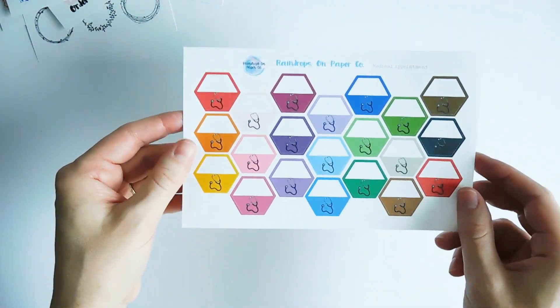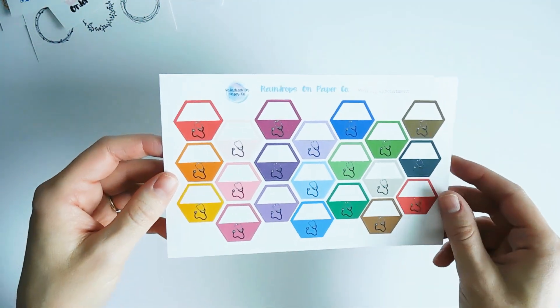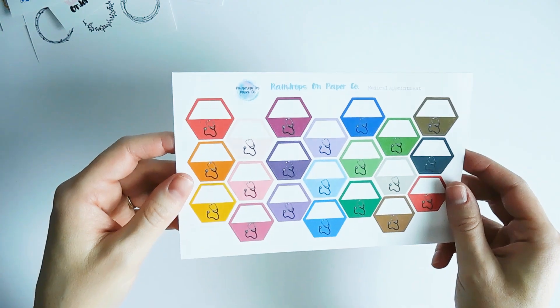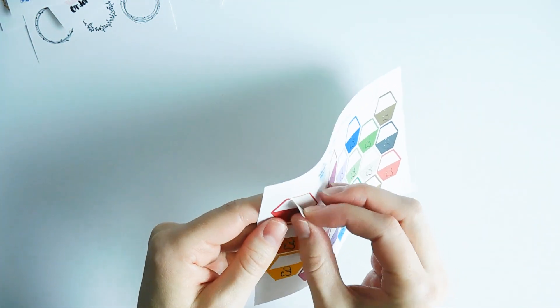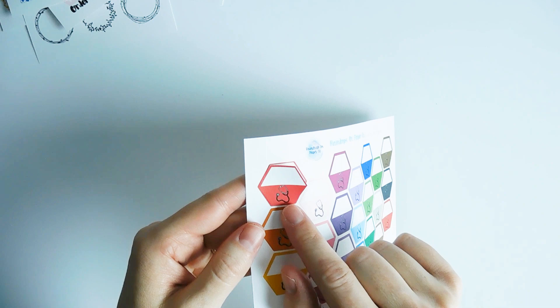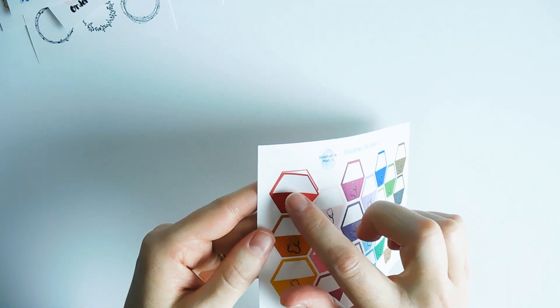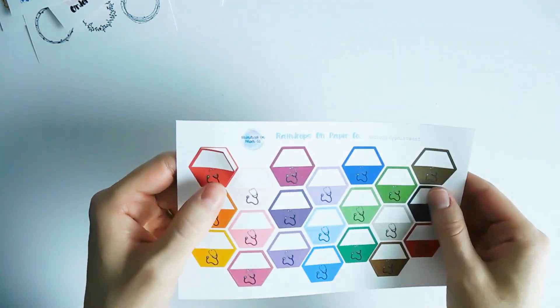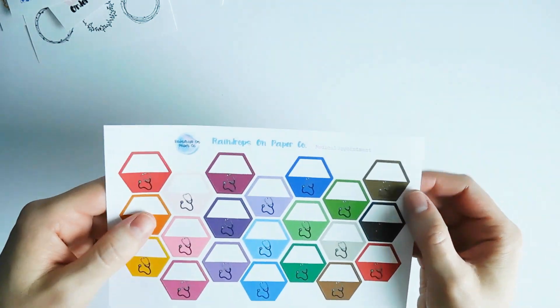And then I created these. I wanted to create something that was a new take on the medical appointment stickers. And so I created them in a hexagon shape and it has a stethoscope there at the bottom. You can write the doctor's name, the time, anything that you need, any information that you need there on the white part of the hexagon.